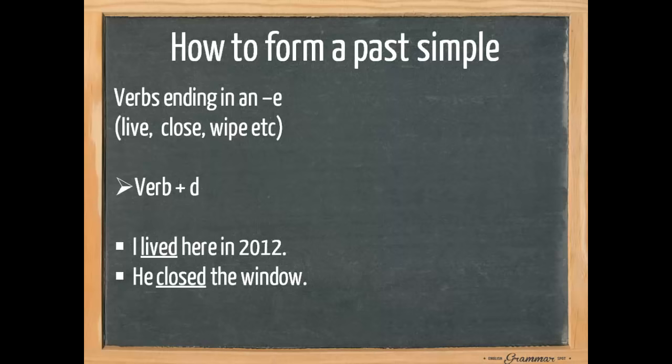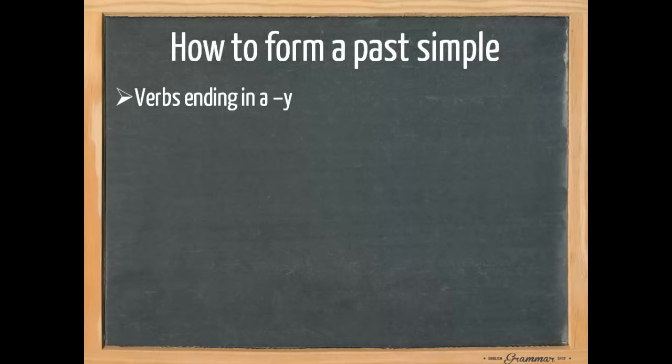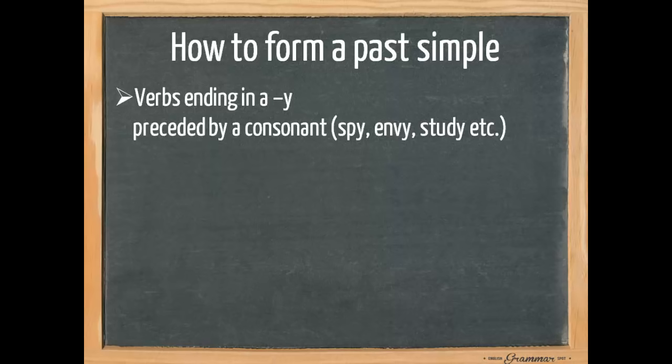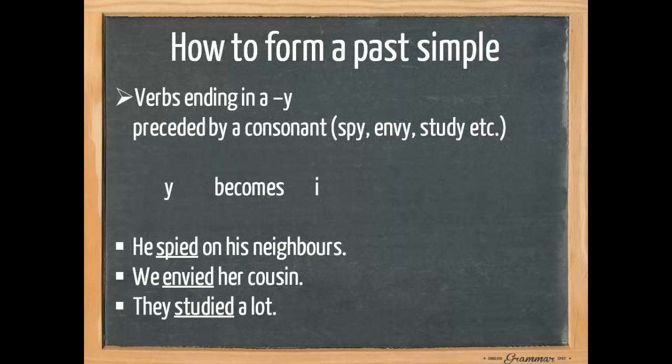We also need to pay extra attention to verbs that end in a y, especially those preceded by consonants such as spy, envy and study, the consonants being a p, a v and a d. Here the y changes into an i. For example, he spied on his neighbours. We envied her cousin. They studied a lot.